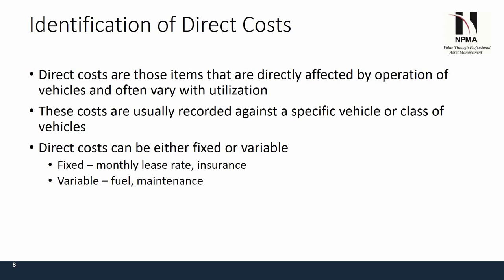Direct costs can be either fixed or variable. Fixed examples include your monthly lease rate and insurance — and yes, government vehicles going into Mexico, Canada, or another foreign country do require insurance since other countries don't recognize the government as self-insuring. The variable part includes fuel and maintenance.